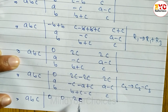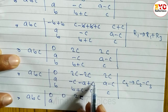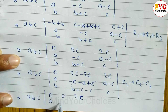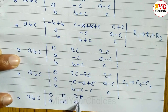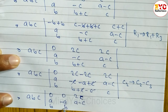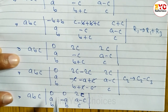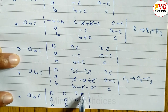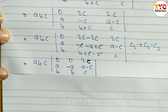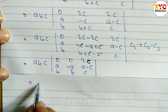After applying C2 → C2 − C3, row 1 is [0, 0, 2c], row 2 is [a, −2c, b+c]... wait, simplifying: c and c cancel giving minus a, and b and b cancel giving b, with c remaining. We now have two zero elements in row 1, so we can find the cofactor of 2c.